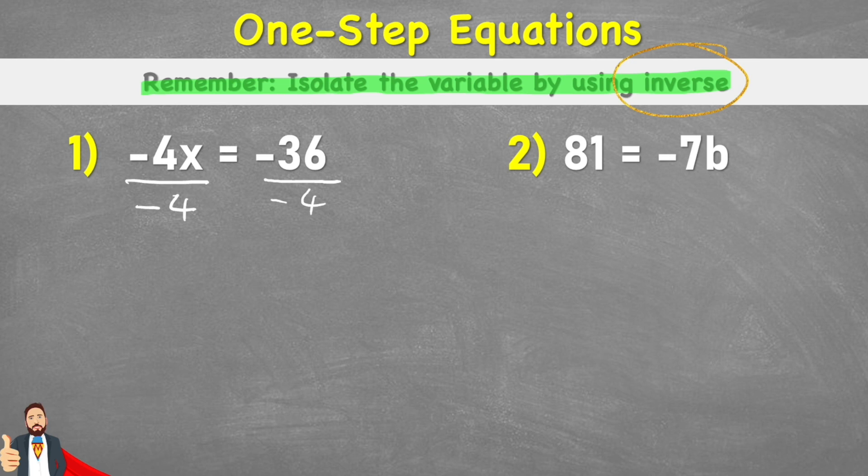And I can begin to solve. So looking at the left-hand side first of all, negative 4x divided by negative 4, well, the multiplication and the division cancel themselves out, because negative 4 divided by negative 4 would leave me with 1x, or therefore just x. So I have x equals, and then on the other side, negative 36 divided by negative 4.